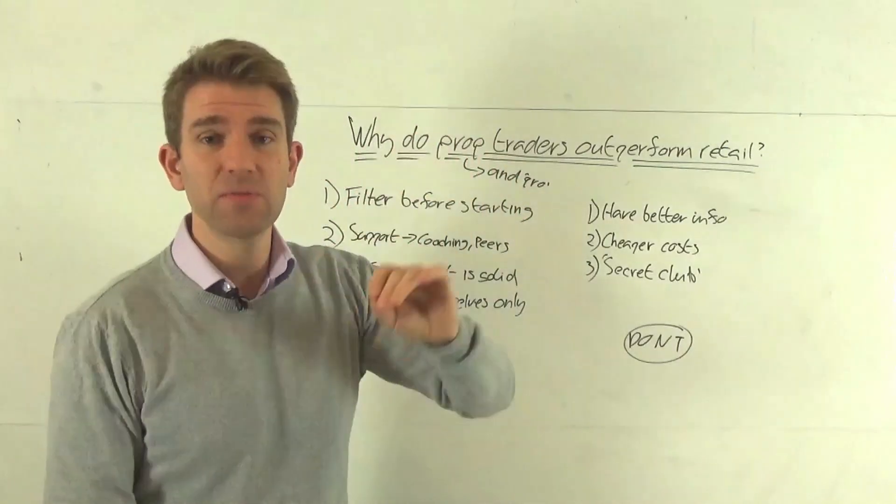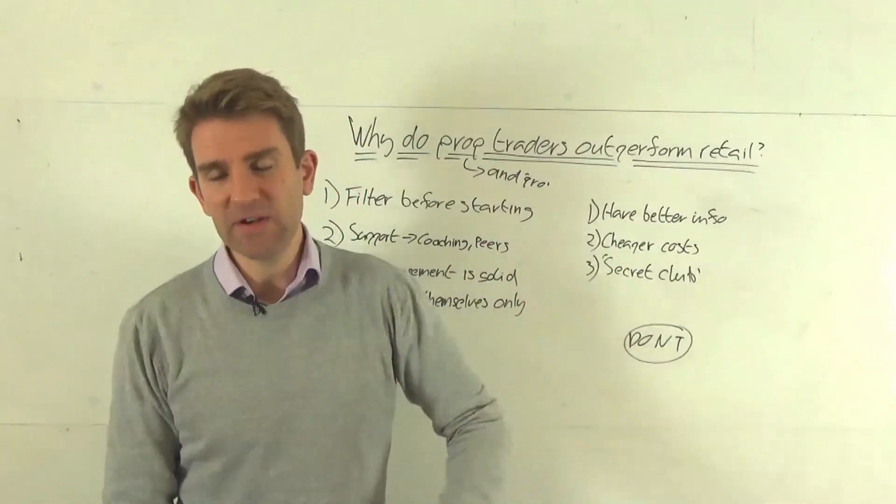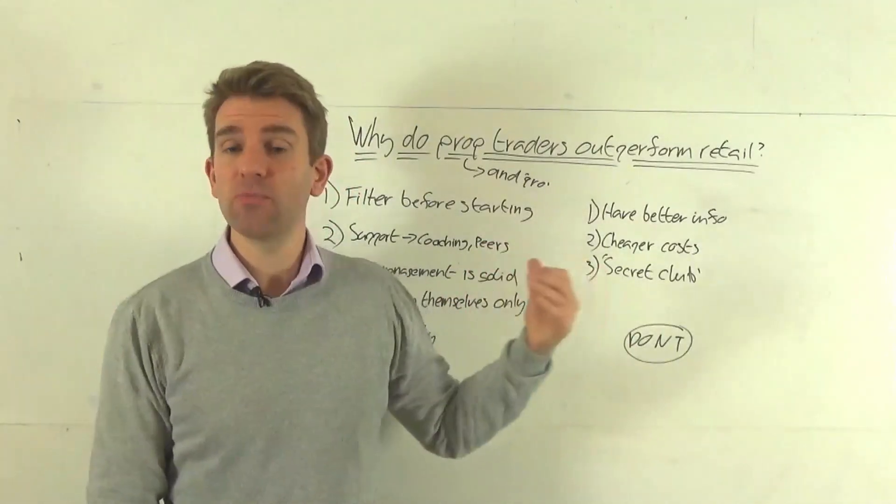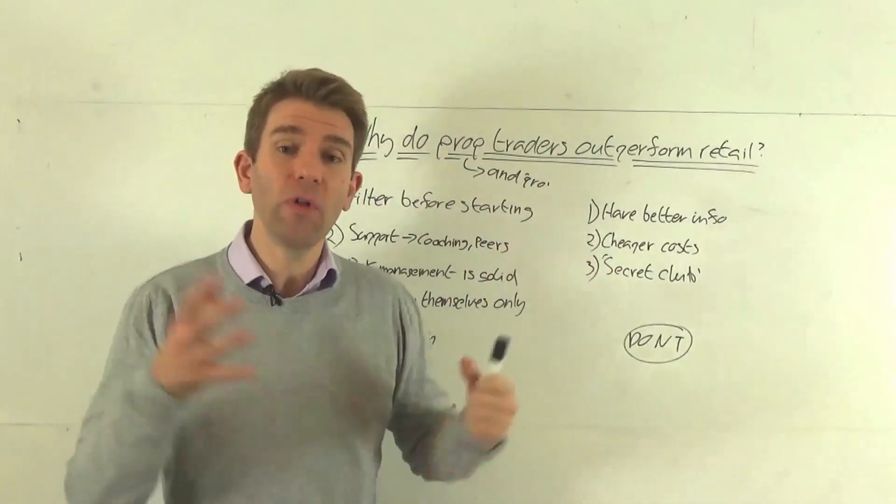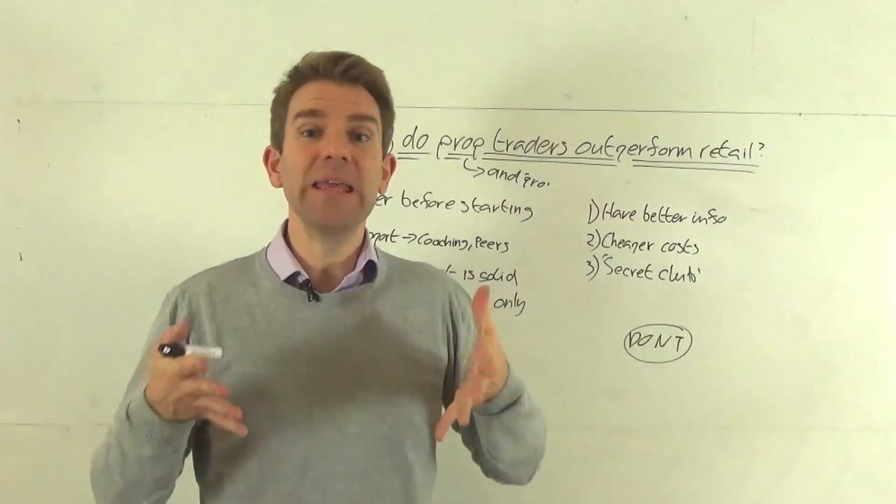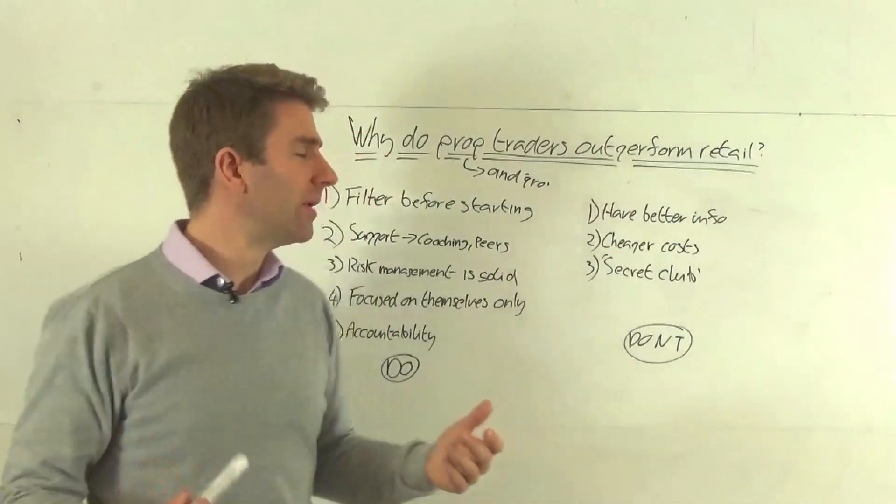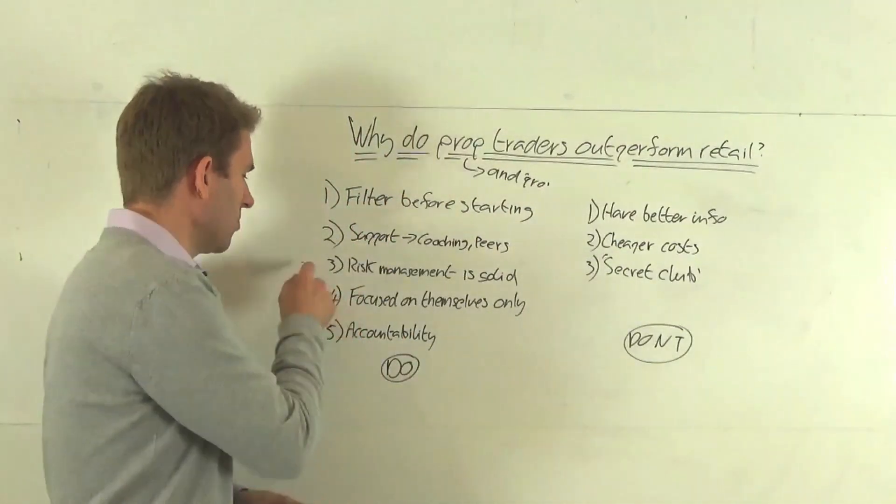So there's loads of reasons for the risk management to be solid. And I think that's the number one reason why most retail traders fail is they're over trading, they're over leveraging, all this kind of stuff, which prop traders generally won't do, or they will do, but it's the company that's doing it. So they're not going to fail unless the company believes that they should have more capital. So they're going to only give more capital to people who are performing. So that's a really big one.